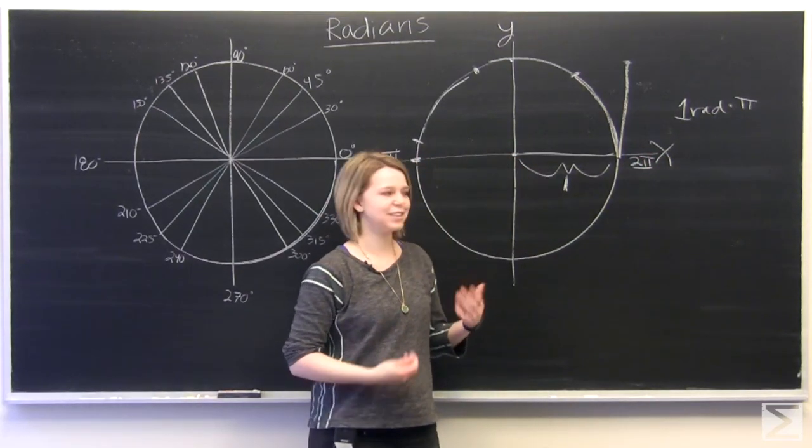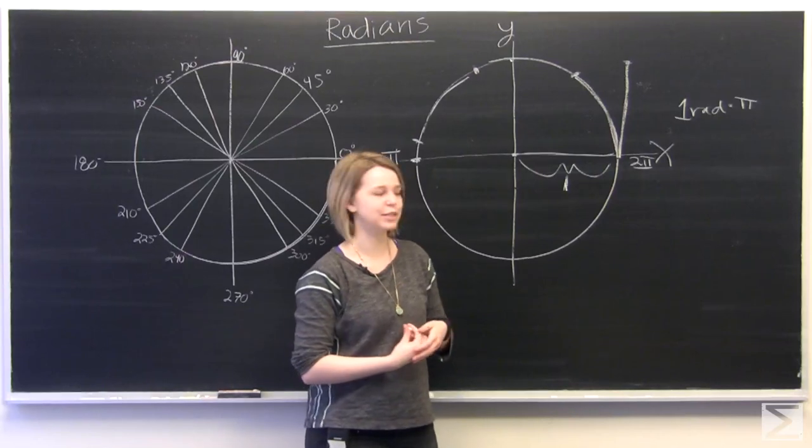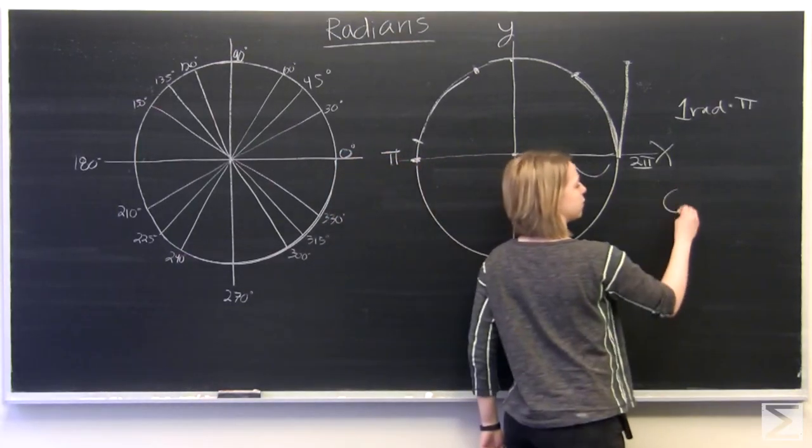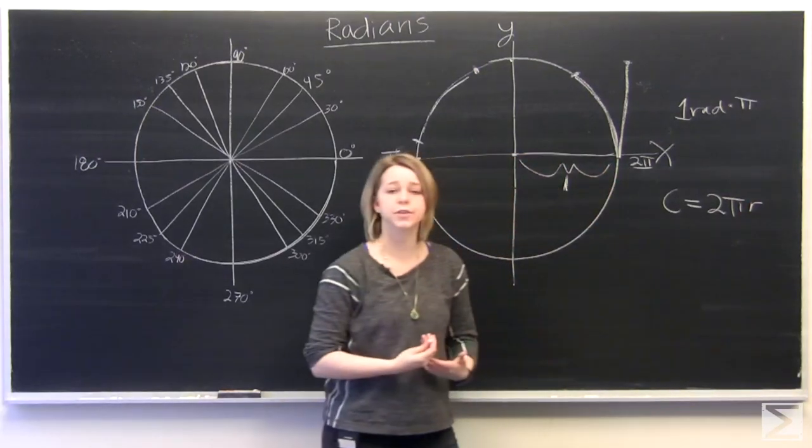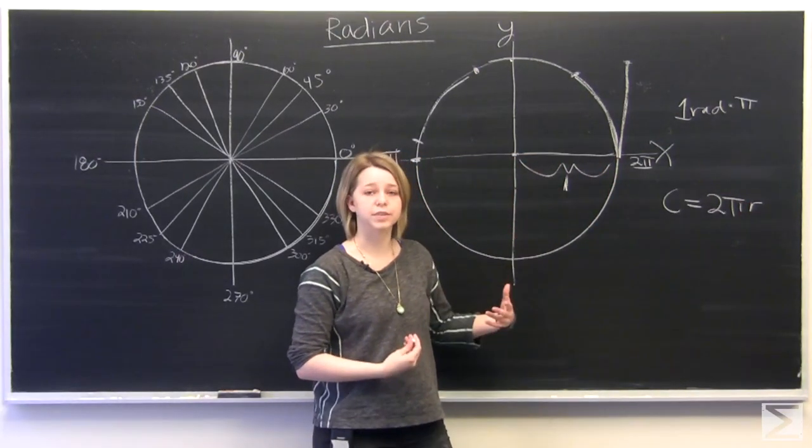Now at this point, a formula should be jumping out to you. The formula for the circumference of a circle is 2 times pi times the radius of our circle, which is basically what we've done here.